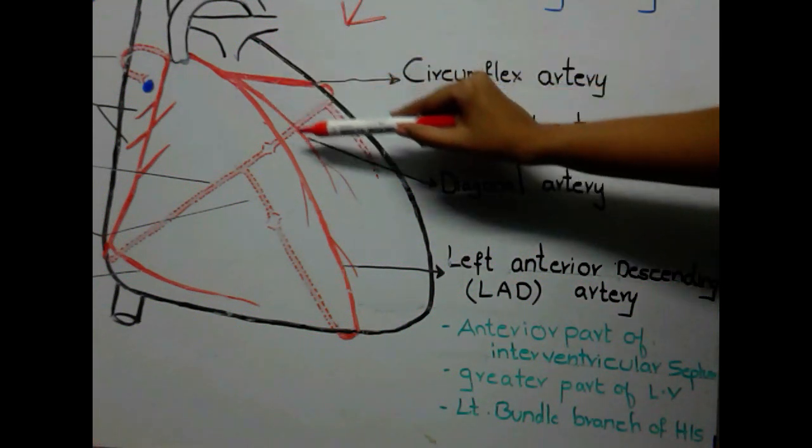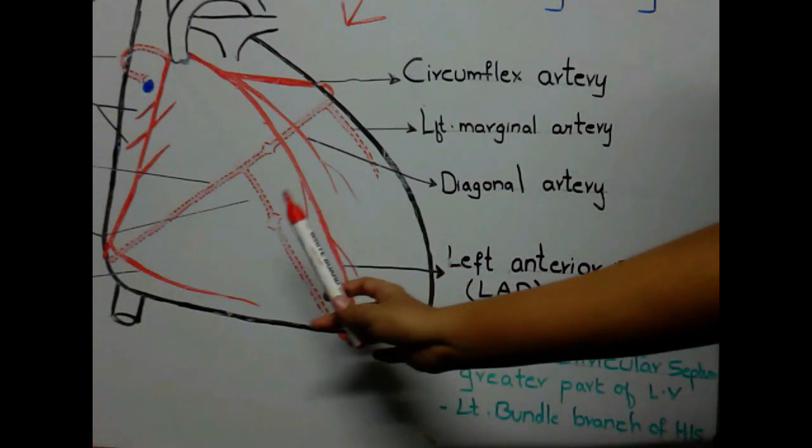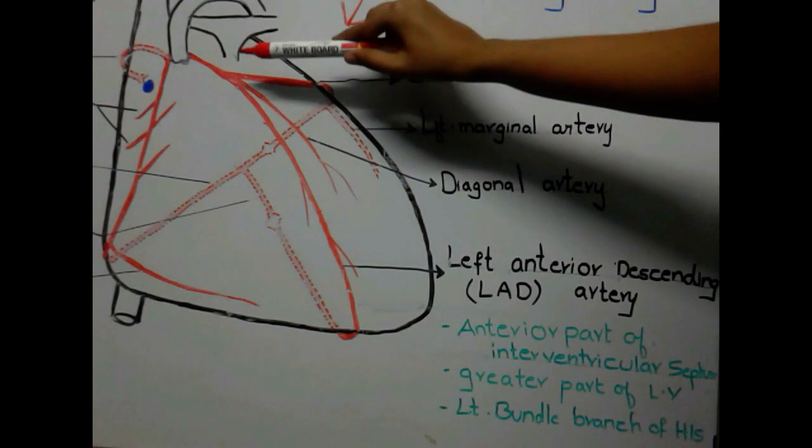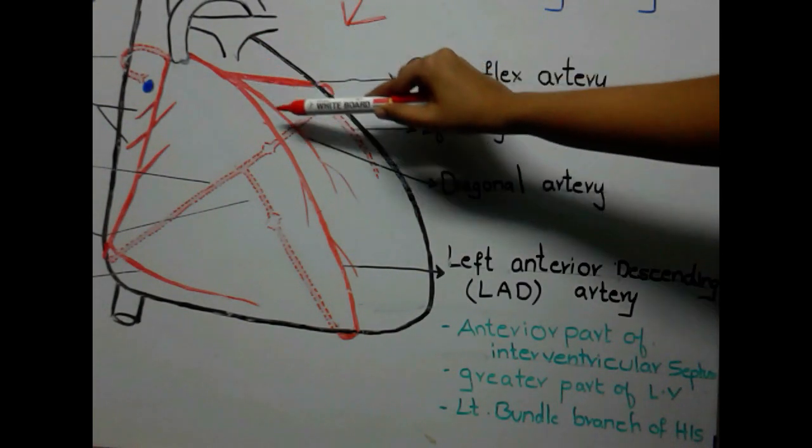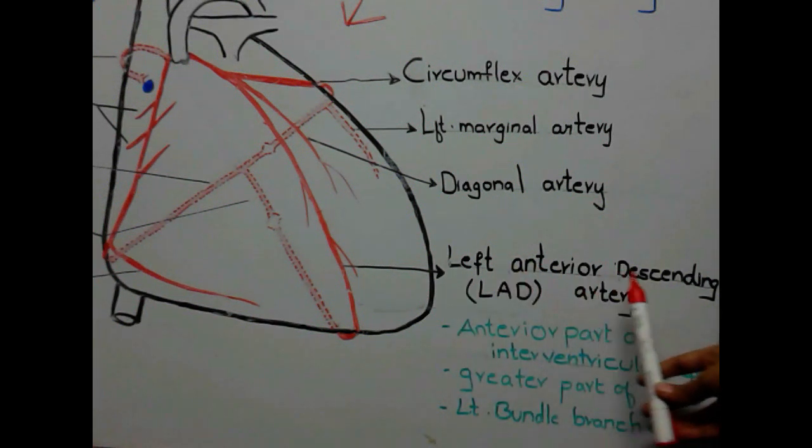One branch descends downwards, goes posteriorly and anastomoses with posterior interventricular artery. As this artery descends along its whole course, it is named as left anterior descending artery.